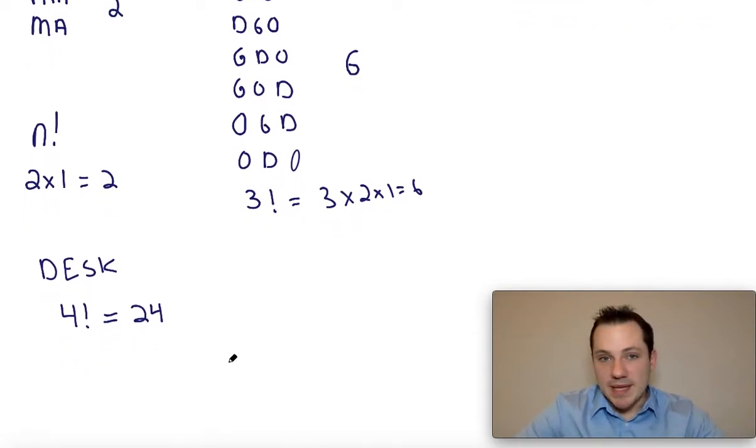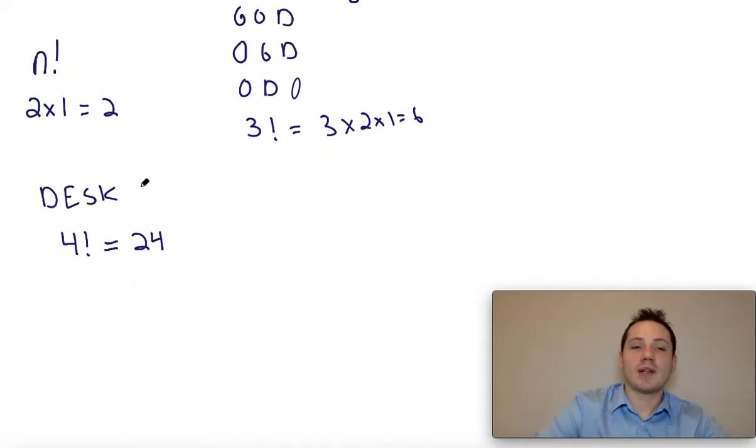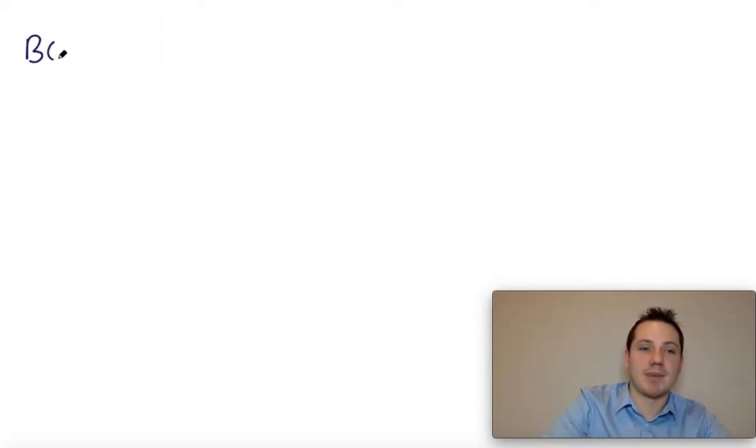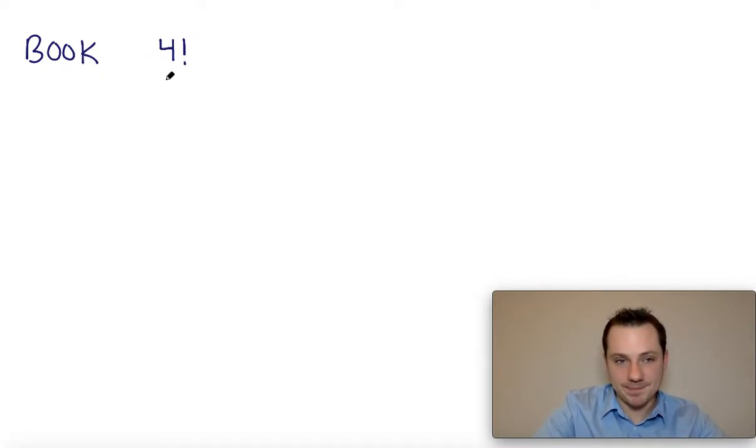But let's say we have repeats. So let's say all four letters weren't different, but some of them were the same. So this is an example that we might see with a word like book, B-O-O-K. So when we're figuring out how many ways we can arrange the letters in the word book, we do want to start off with the number of letters factorial. So I'm going to put four factorial on the top. Now what's important is that you do see that these O's repeat.